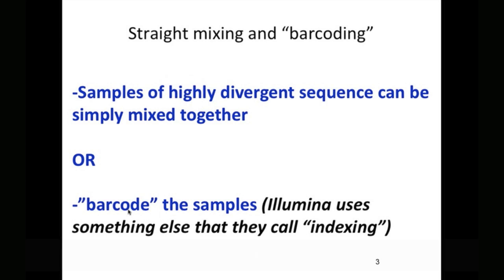So more common is what's called barcoding. Illumina uses a slightly different technology which they call indexing, but in reality the two terms are used interchangeably, so we'll stick with barcoding.